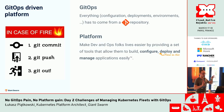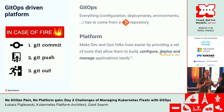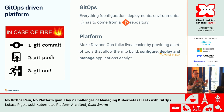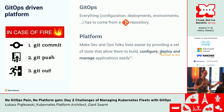GitOps is probably the easiest one to understand and everyone knows what it's like. You put everything you have as code — your configuration, your infrastructure, your applications, everything. You describe this as code and then you keep this code in Git. Then you have GitOps.